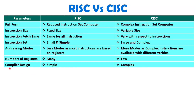When we talk about compiler design, it will be simple with RISC because we have a small set of instructions. With CISC architecture, compiler design will be complex because the instruction set is complex and many addressing modes are present. So your compiler design will be complex with CISC architecture.